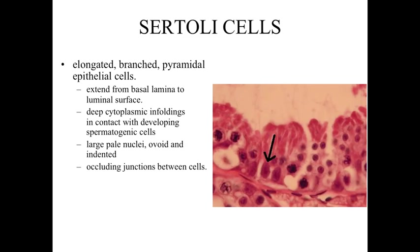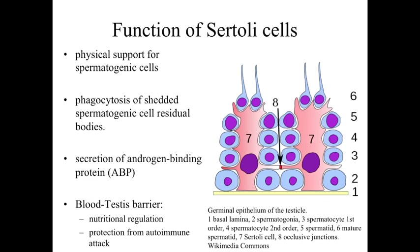Leaving the sperm cells for a moment, we turn to the support cells — the Sertoli cells — the second category of cells within the seminiferous epithelium. Sertoli cells are elongated pyramidal cells sitting upon the basal lamina, extending all the way from the basal lamina to the luminal surface, establishing the entire structure of the seminiferous epithelium. They have large, pale, ovoid nuclei and surround and support all of the developing sperm cells. They establish occluding junctions between cells, provide physical support, and phagocytize shed material as round undifferentiated cells mature into sperm cells.